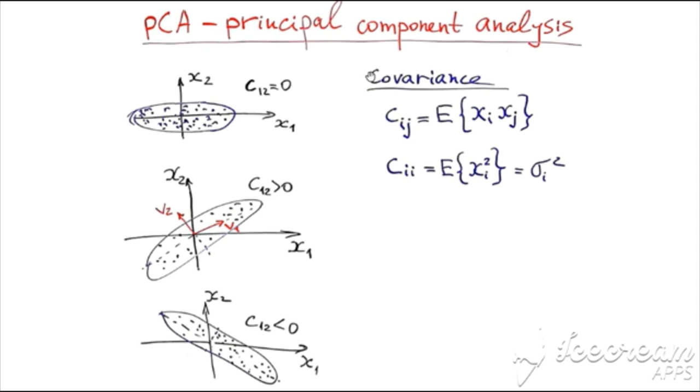First, let me remind you of the notion of covariance. If I have two zero mean random variables XI and XJ, covariance Cij is just the expectation of the product.